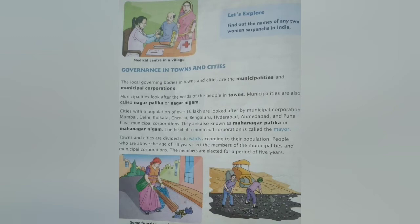Towns and cities are divided into wards according to their population. People above the age of 18 years elect the members of the municipalities and municipal corporations. Members are elected for a period of five years, and one-third of the members must be women — same as the panchayat system. The head is called the Mayor, while in a village the head is called the Sarpanch.